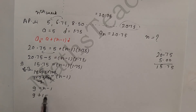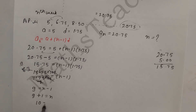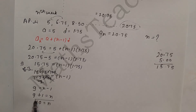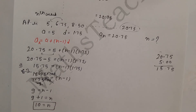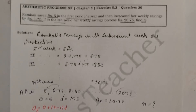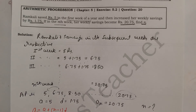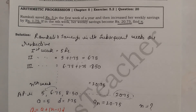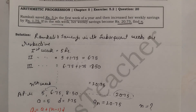So n = 10, meaning in the 10th week her savings reach Rs. 20.75. I hope you understood all three questions solved in this video. If you have any doubts, please comment in the box. Don't forget to subscribe to my channel. Thank you.